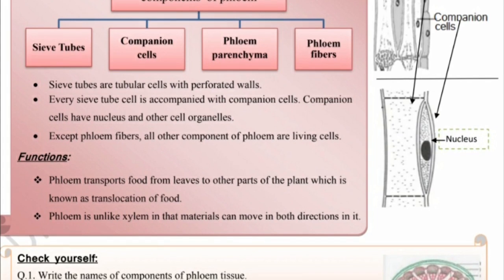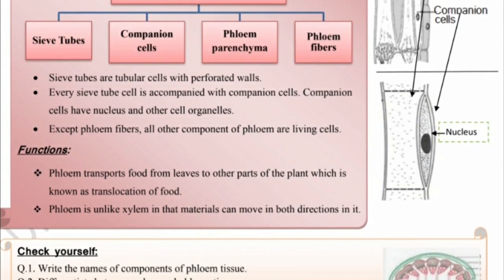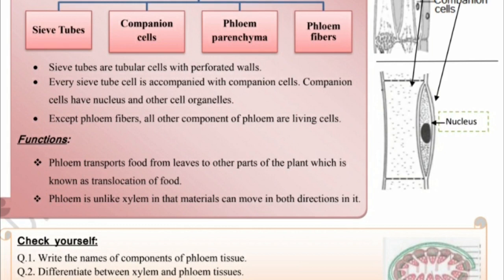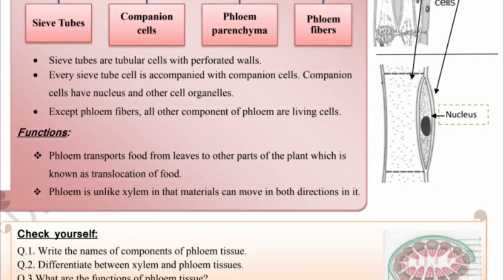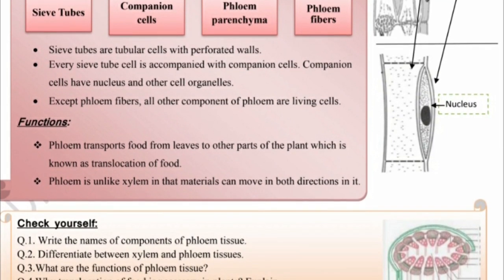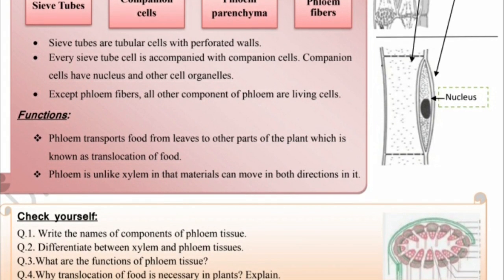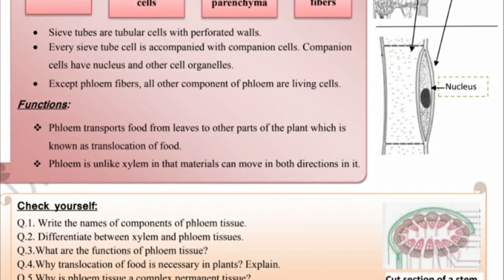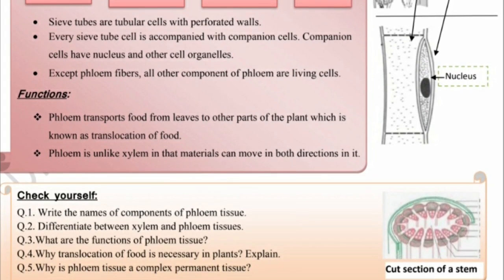Functions: Phloem transports food from leaves to other parts of the plant, which is known as translocation of food. Phloem is unlike xylem in that material can move in both directions in it, whereas in xylem, movement occurs only in one direction.